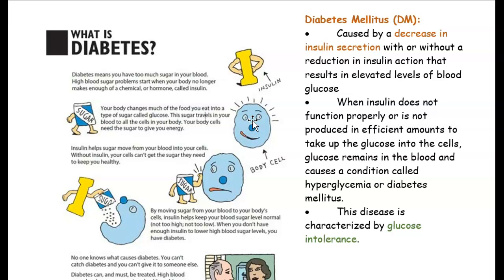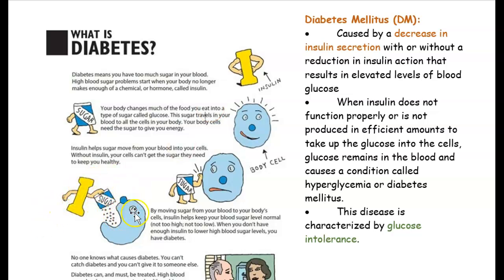Your body needs sugar to function. But the sugar will not just enter the cell on its own — instead, it needs insulin. Insulin is a really important hormone in our body. It gives sugar to the cell.